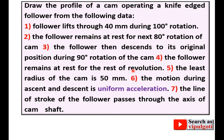The follower remains at rest, means next remaining dwell period. The least radius of the cam is 50 mm, means radius of the base circle. The motion during ascent and descent is uniform acceleration.